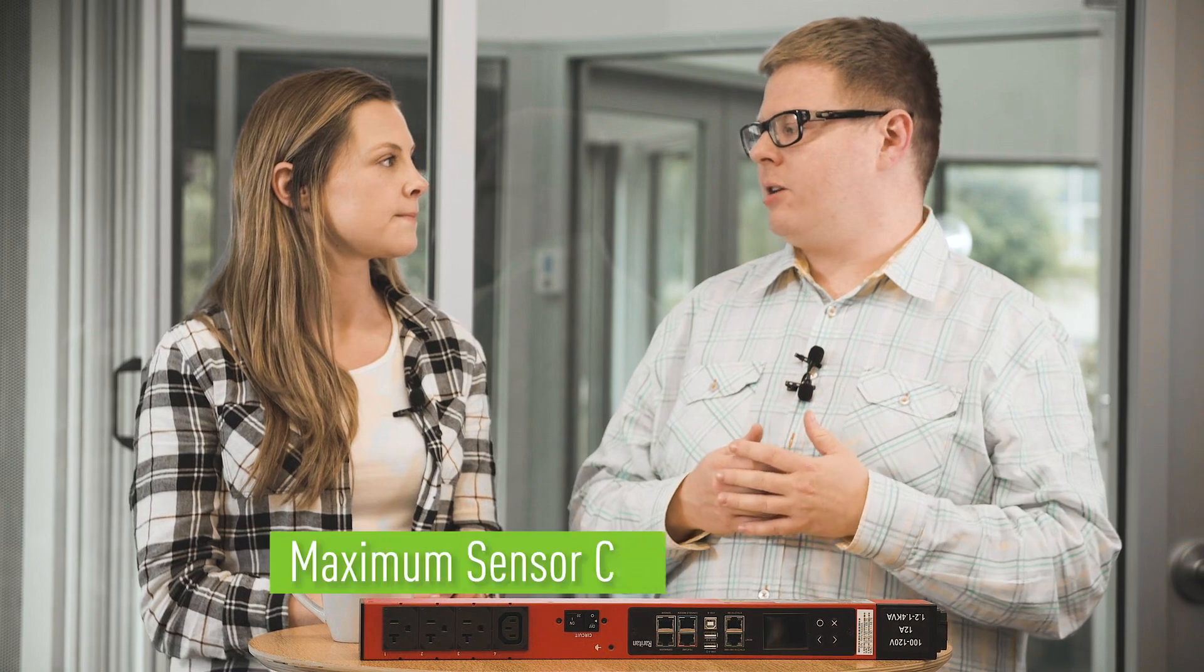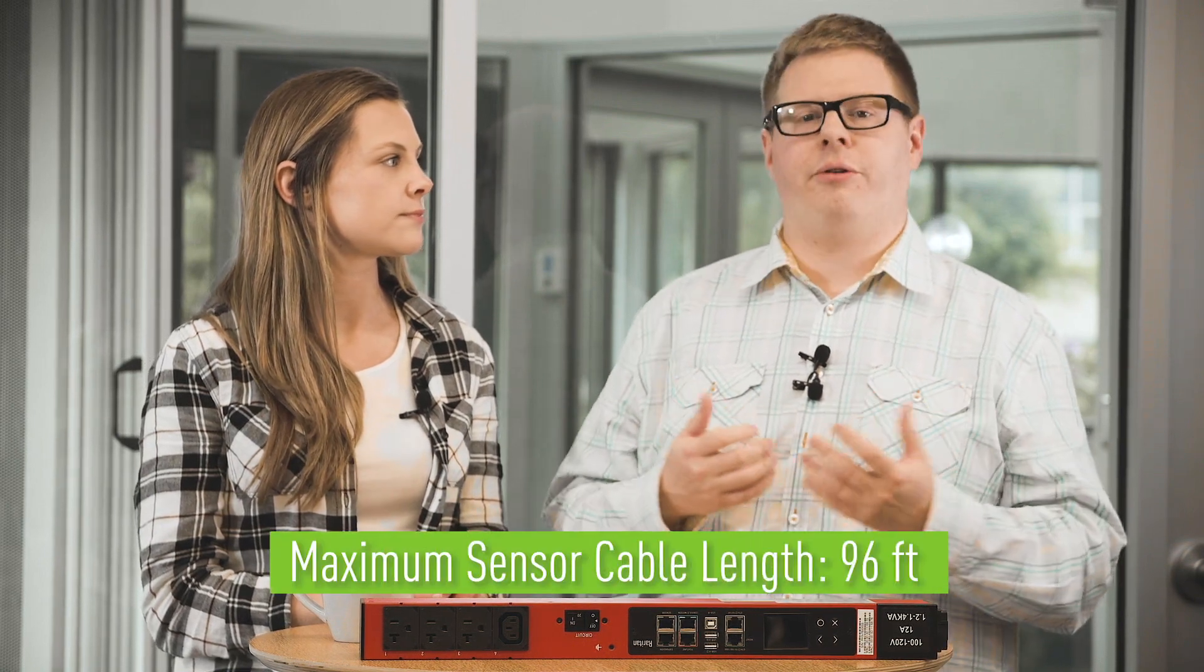So, what are some limitations that a user might face with smart sensors? You know, that's a good question. Most typically, we get the question about distance. The amount of length between the IX7 controller and the sensor port, and then the last sensor in the chain and how far they can run that. The approximate length limitation is around 96 feet or 30 meters.